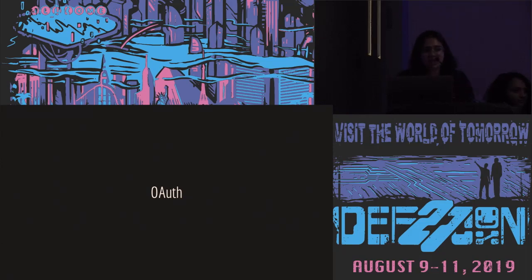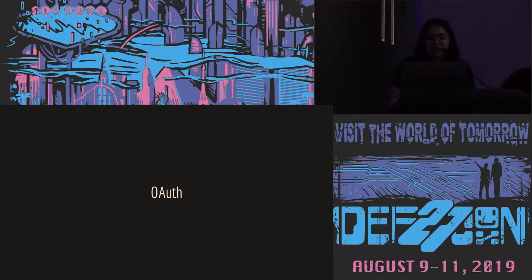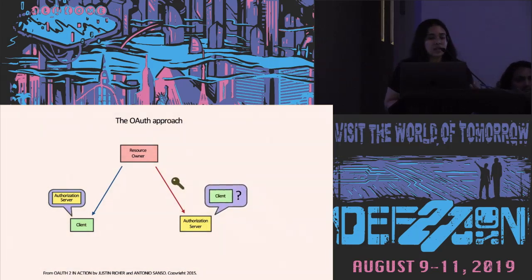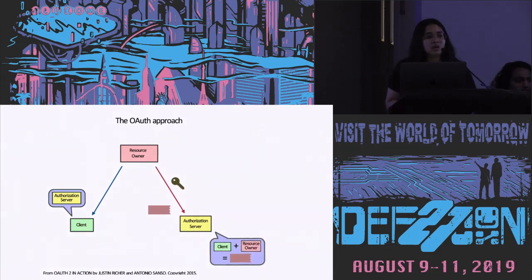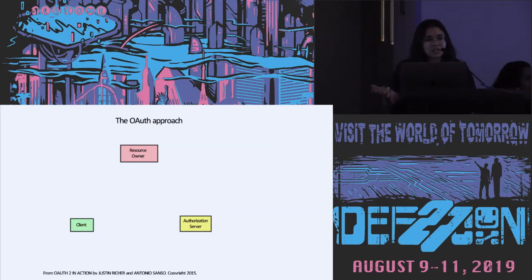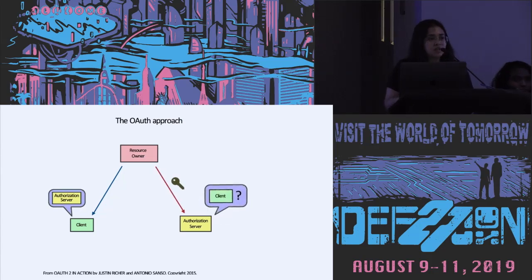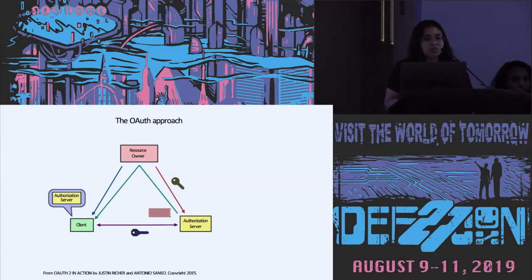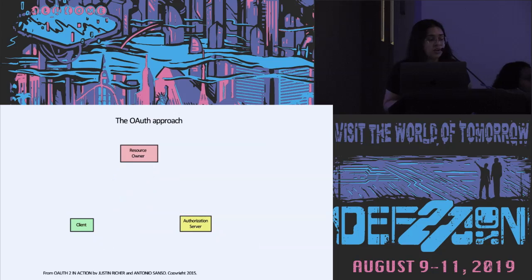The next topic is OAuth — open authentication or open authorization. OAuth deals mainly with three entities: the client, the resource owner, and the authorization server. The client wants to access a resource provided by the resource owner, and the resource owner needs to authenticate that it's the right client. The authorization server knows who the client is and provides verification to the resource owner. The main things exchanged between these three entities are tokens — access tokens, refresh tokens, and authorization codes.